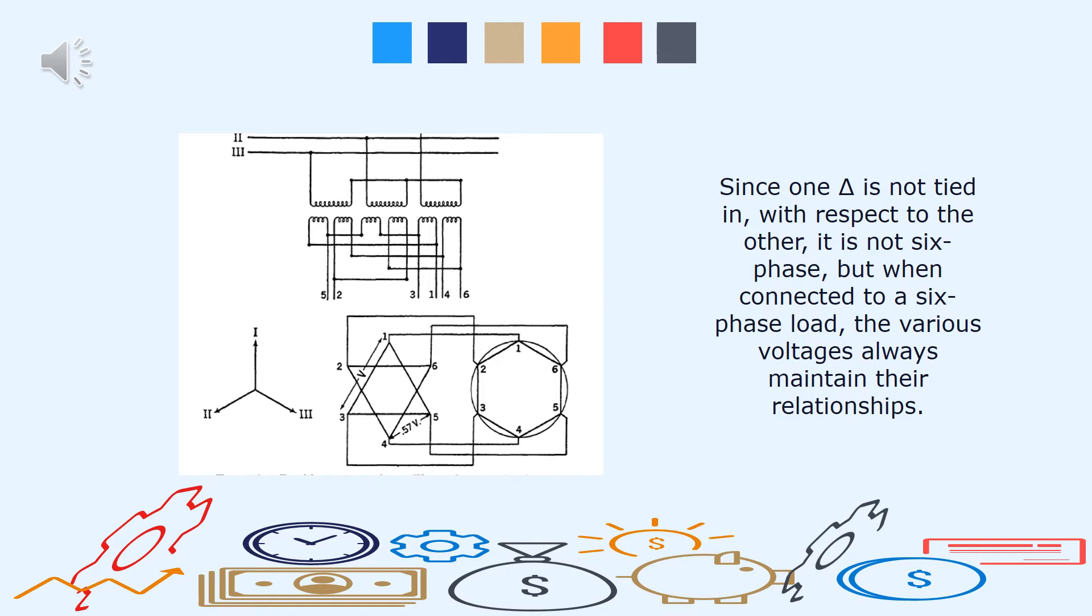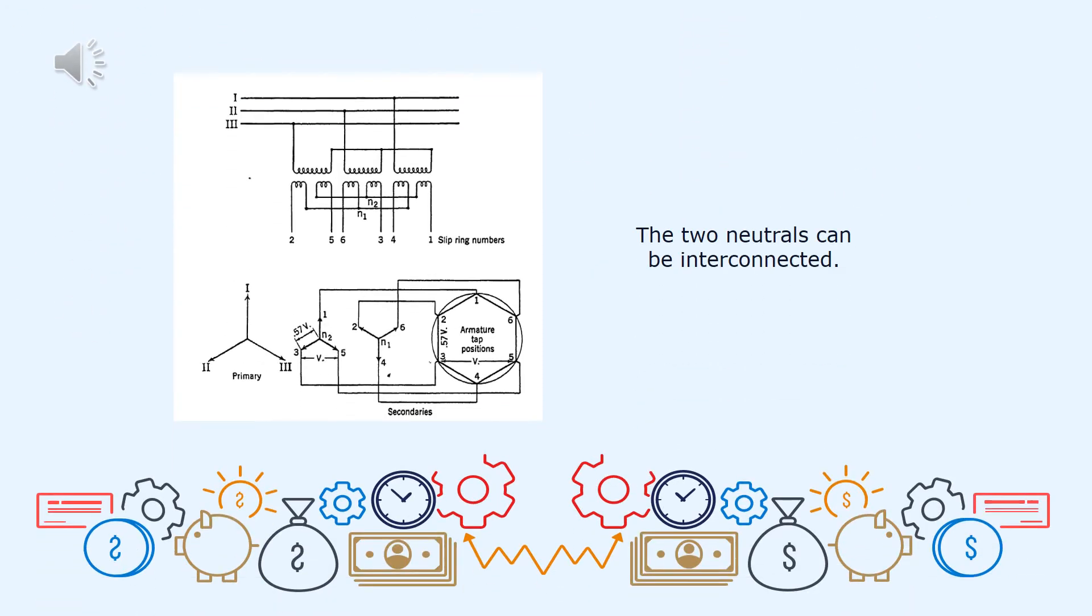So in the next slide, sa figure na ito makikita naman natin ang double delta connection para ma-obtain ang six-phase. Since one delta is not tied in with respect to the other, it is not strictly six-phase. But when connected to a six-phase load, the various voltages always maintain the correct or precise one-phase relationship.